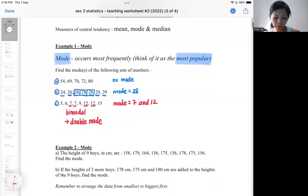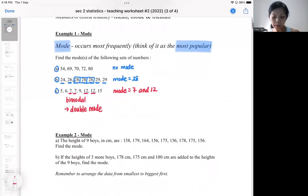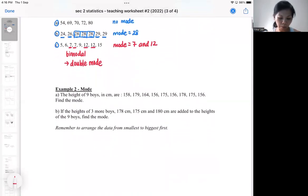Let's go on to example two. Sometimes when you look at the data, if the data is not arranged for you, it's actually not so easy to tell. One of the key things is we want to arrange the data. Sometimes if you don't arrange the data, you actually couldn't tell which one appears very frequently. For example, in this question A, we got nine boys, and this is their height. If you look, it's quite jumbled up: we got 158, then 179, then 164.